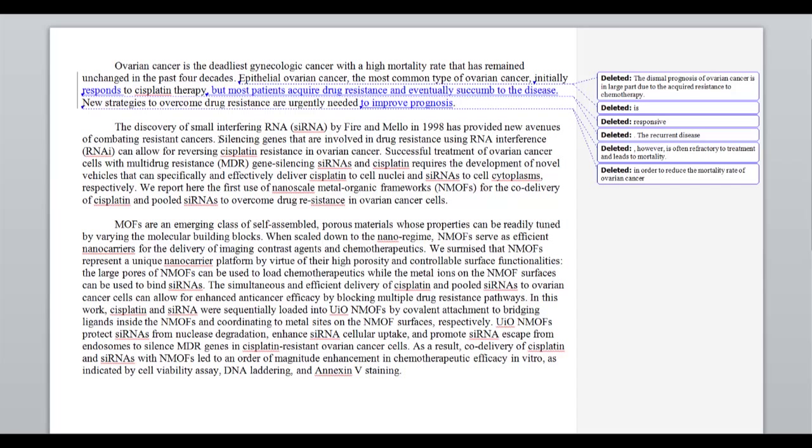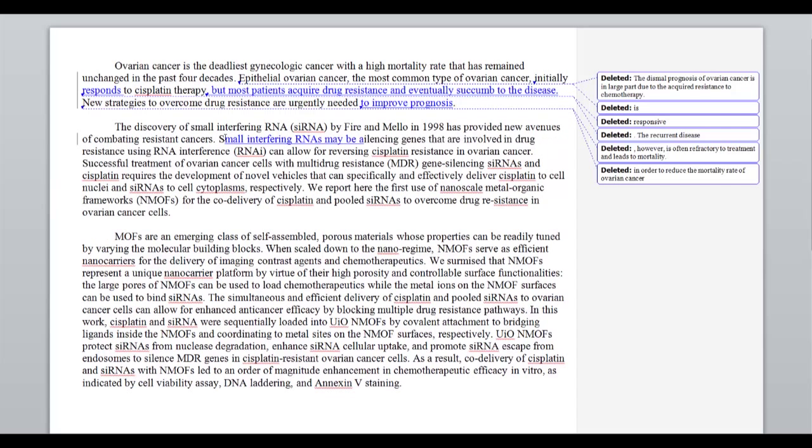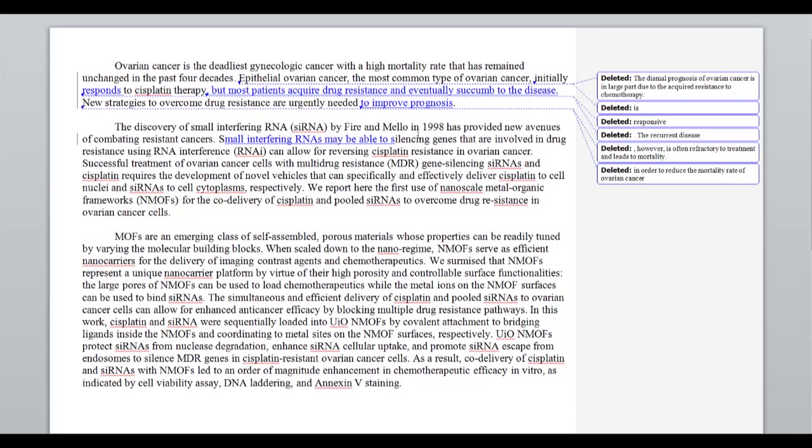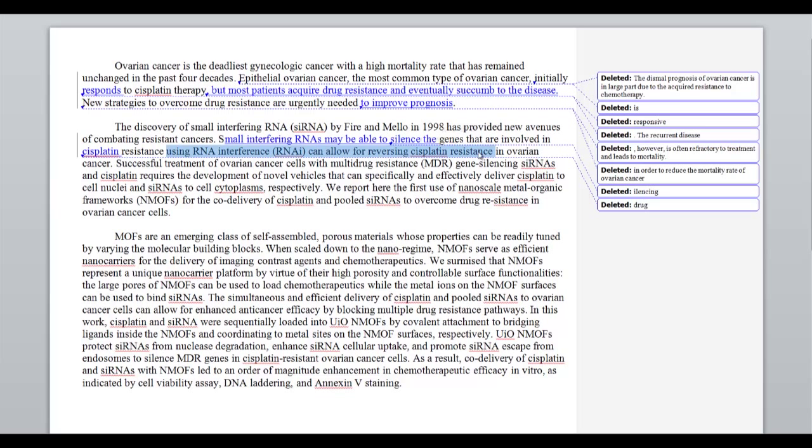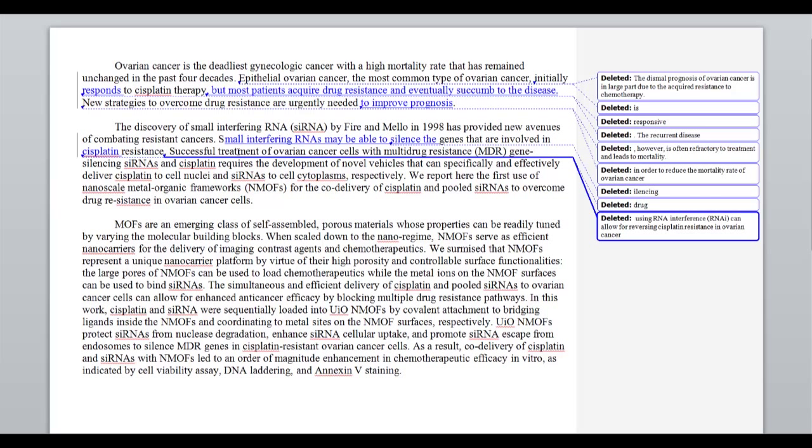We get to the next sentence, silencing genes that are involved in drug resistance using RNA interference can allow for fighting drug resistance. I think the idea of silencing genes with RNA interference is just saying using the small interfering RNAs. So let's just say that a little bit more directly. So how about small interfering RNAs may be able to silence the genes that are involved in cisplatin resistance. And we can get rid of all of that. We probably don't even need the in ovarian cancer since I've already said cisplatin resistance. Given the context here, I think we can assume that the reader will know we're talking about in ovarian cancer.